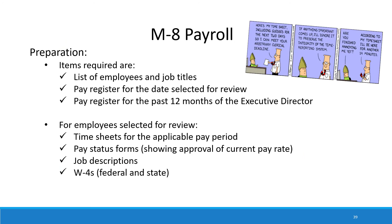Our next topic is payroll. Initially we're going to ask you for a list of employees and their job titles for all employees that are either paid directly or indirectly from OCA grant funding. We'll then make a selection of a paid date that we'd like to review. We also ask to see the pay register for the past 12 months for your current executive director. During the review we're going to look at the timesheets or pay status forms, job descriptions, and federal and state W-4s for the selected employees.